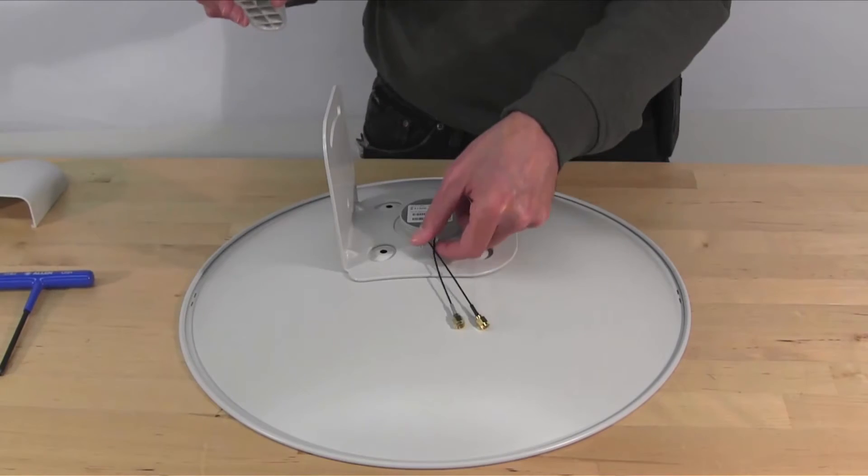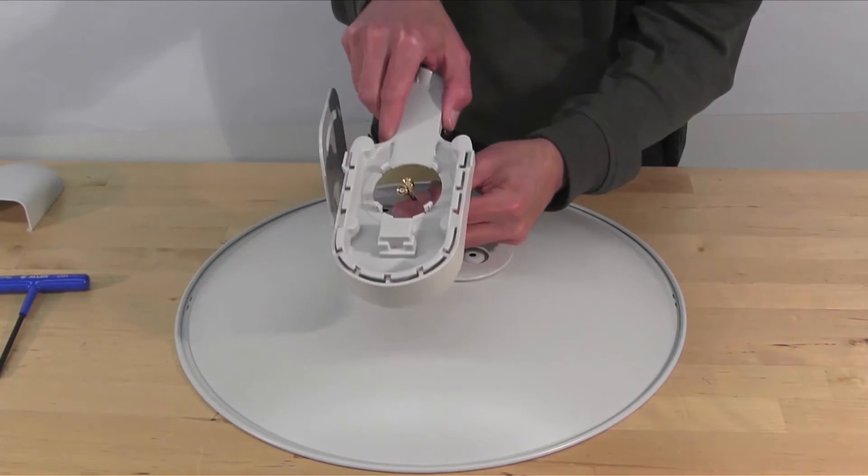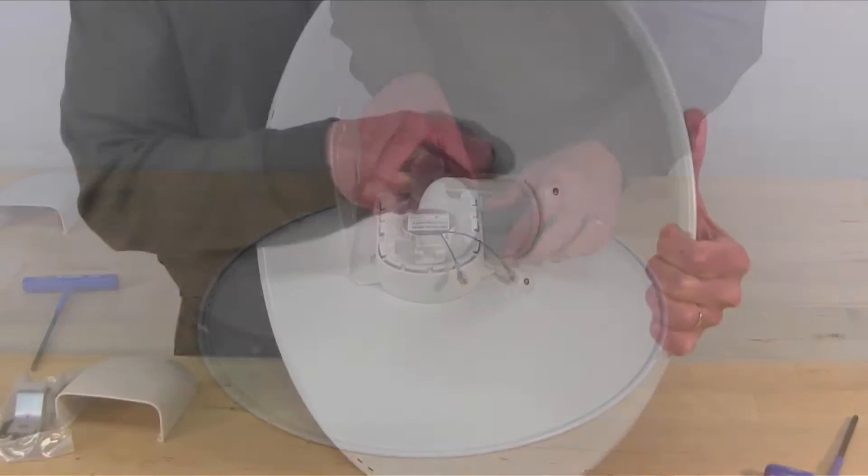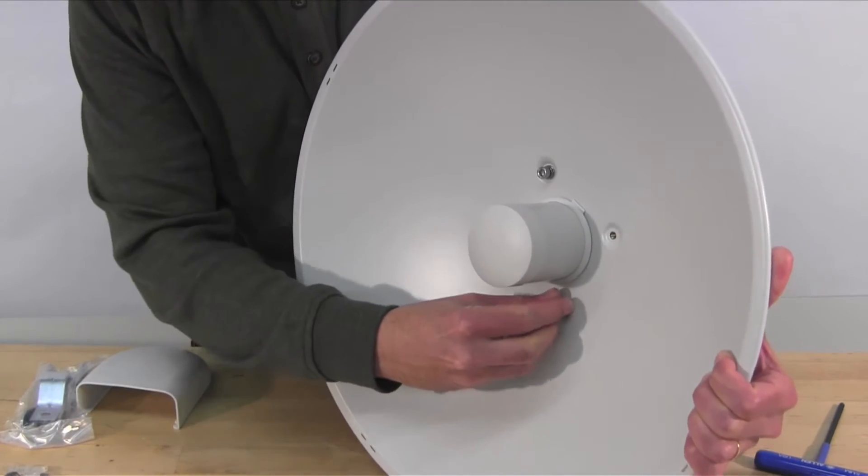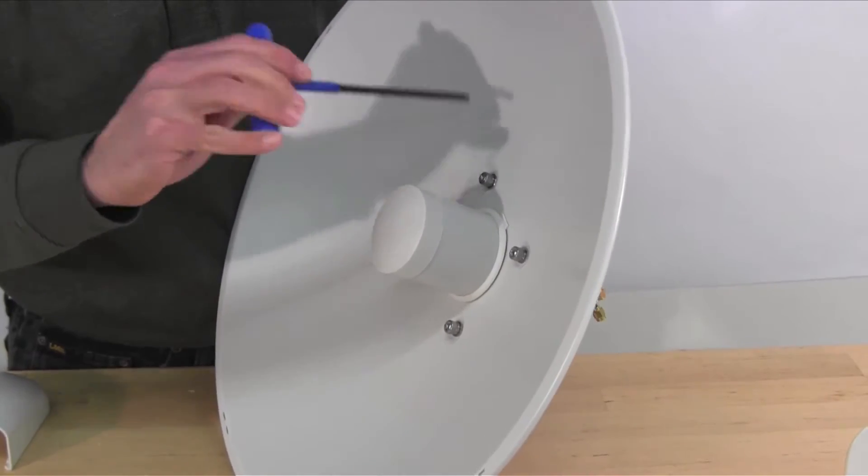Install the shoe over the mounting bracket and route the cables through to ensure they are not pinched. Install the four screws and washers by installing them from the front and tightening by hand. Use a hex nut to tighten the screws.